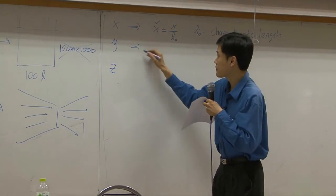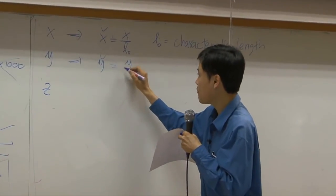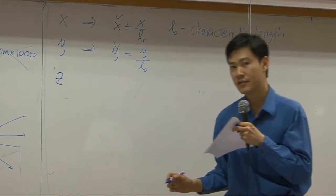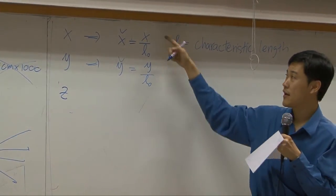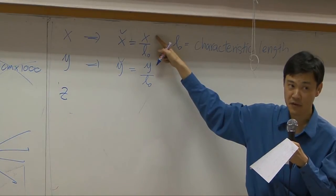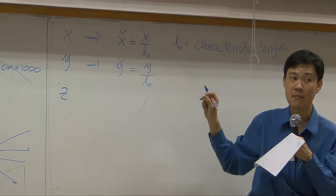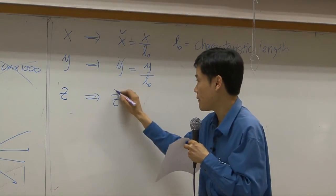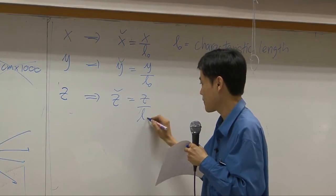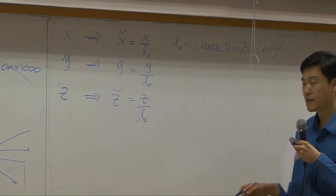Same thing for y, I will set it up, y divided by characteristic length. Now, if you consider unit, x has unit of meter, length has unit of meter as well. So this ratio becomes dimensionless for z as well.